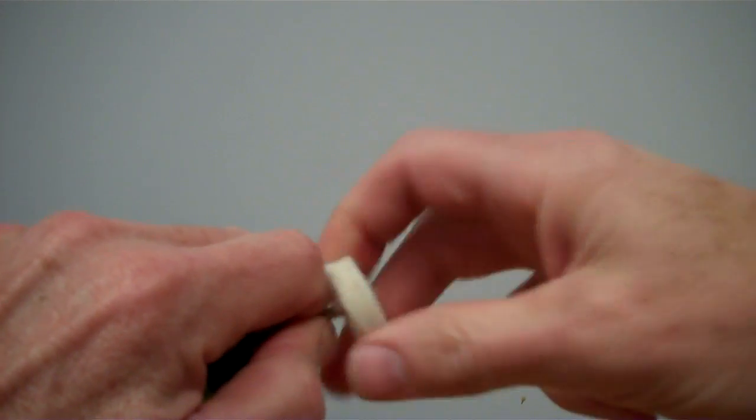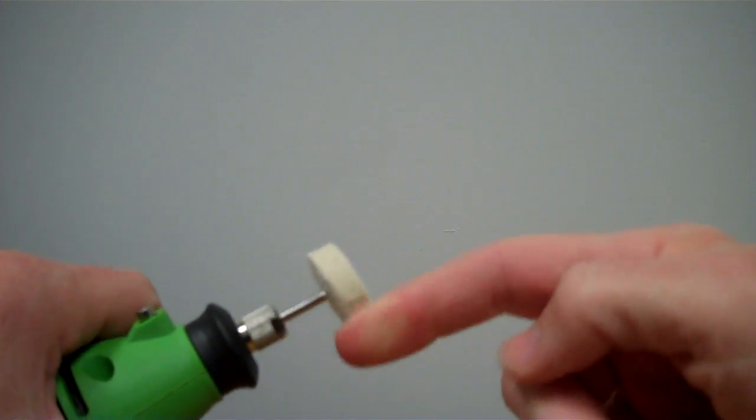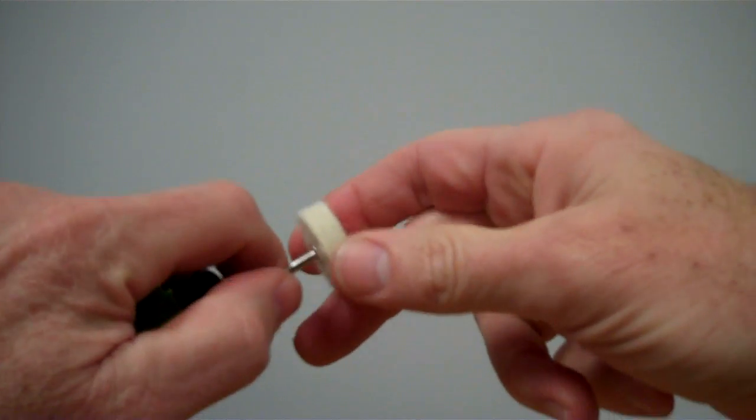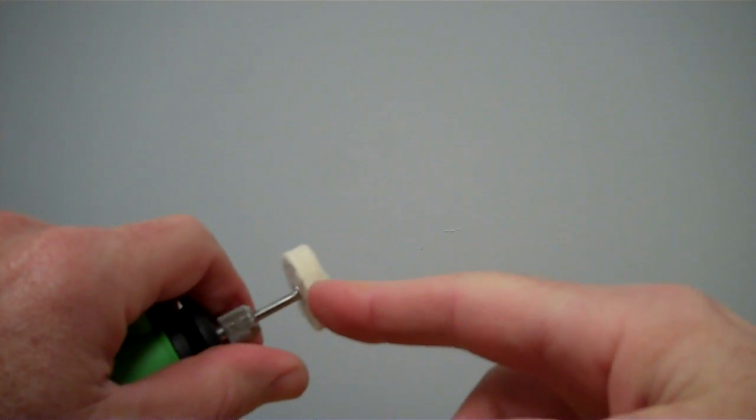And then once it's on, that's all you really have to do because the direction that the wheel is going to turn when the tool is on will make sure that it stays tight. So that's what that threaded style mandrel is for.